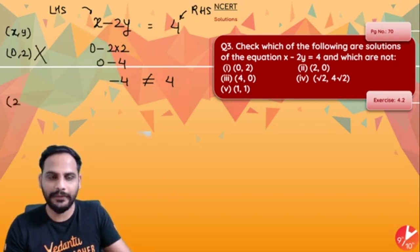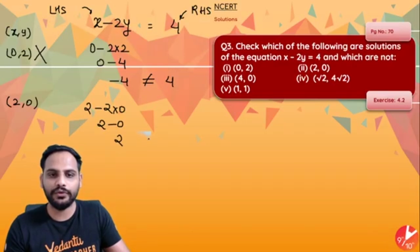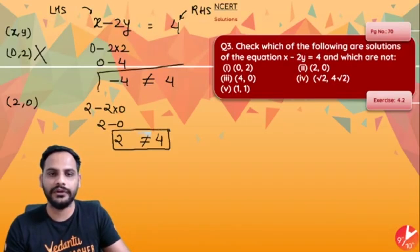Option B, second part is 2, 0. So if I put 2, 0, x is 2 minus 2 into 0 which is 2 minus 0 which is equal to 2. 2 and 4 again are not equal to each other. So this is also not a solution.